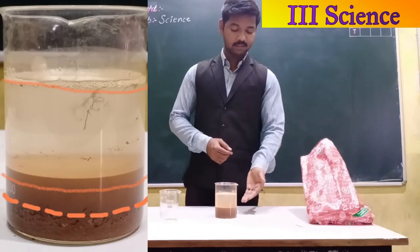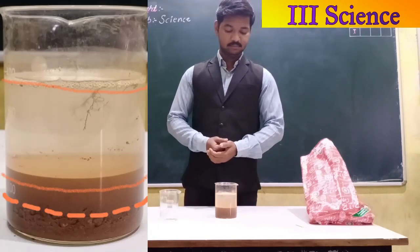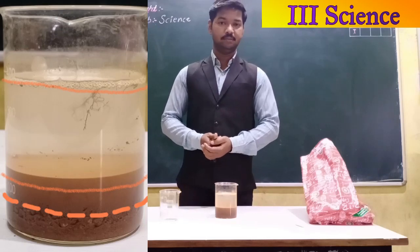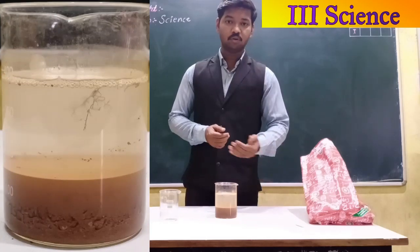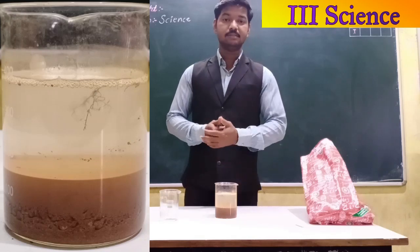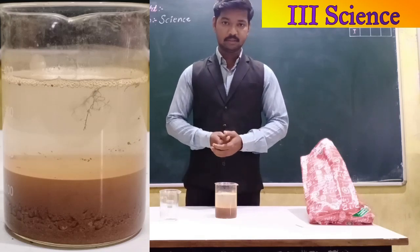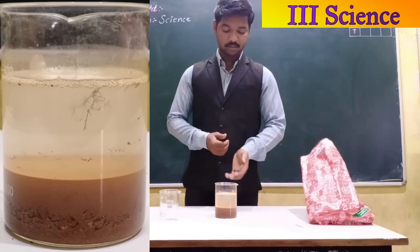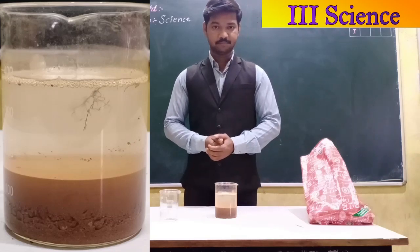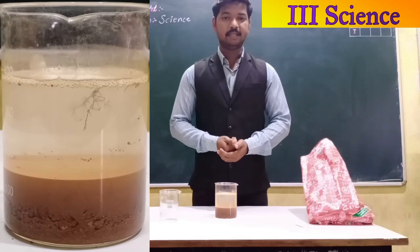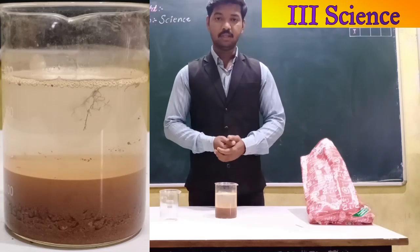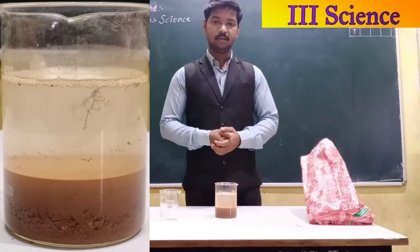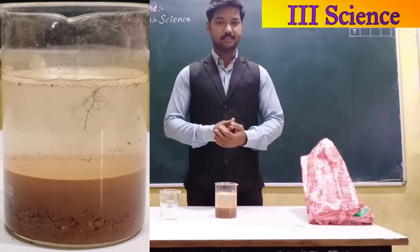Above the sand, we find clay. These are fine particles of soil. The water above the clay is not clear, because it contains dead plants, pieces, and remains of dead animals. Remains of dead insects float on the water. This is dark brown in color and it is known as humus.